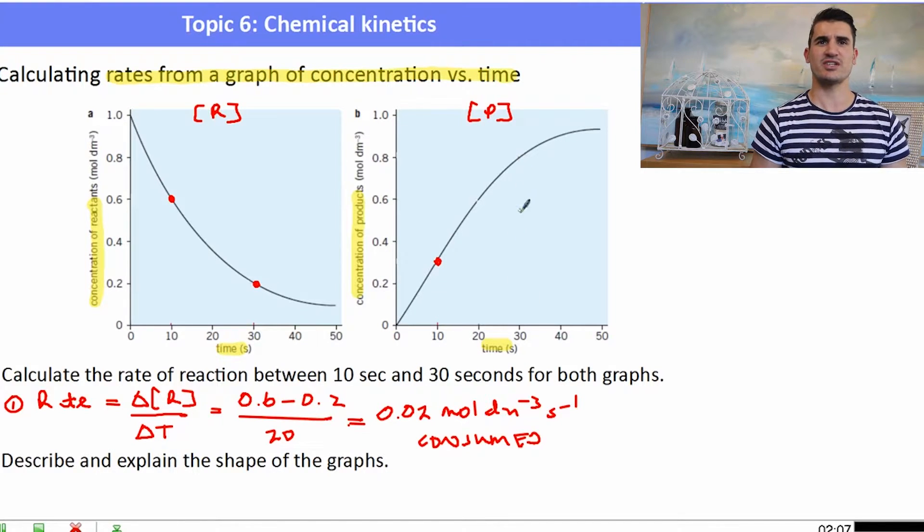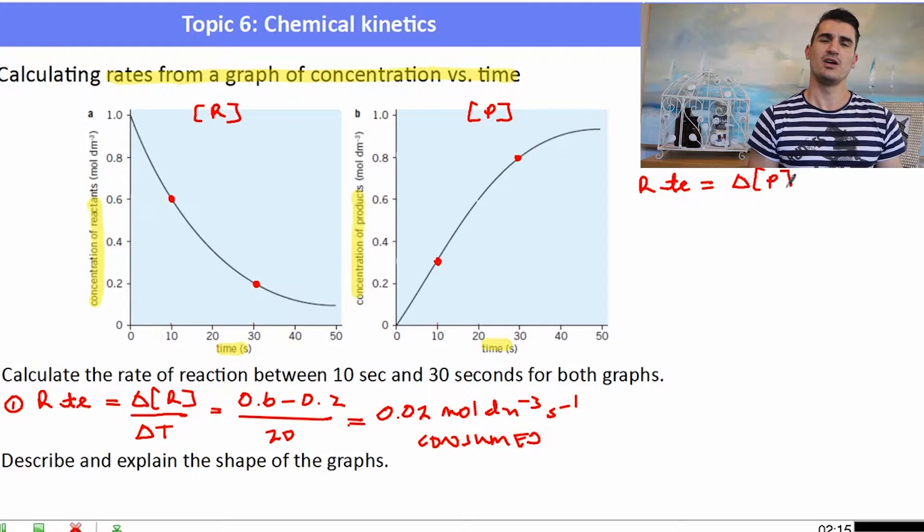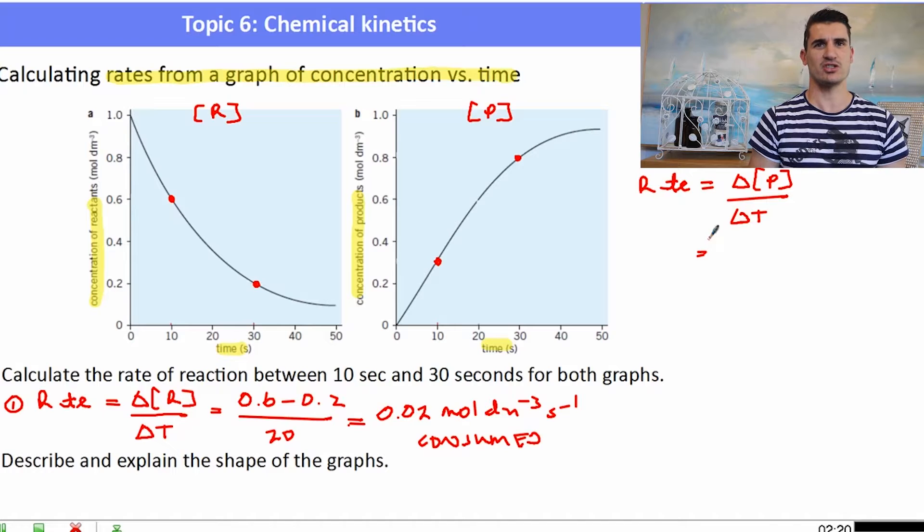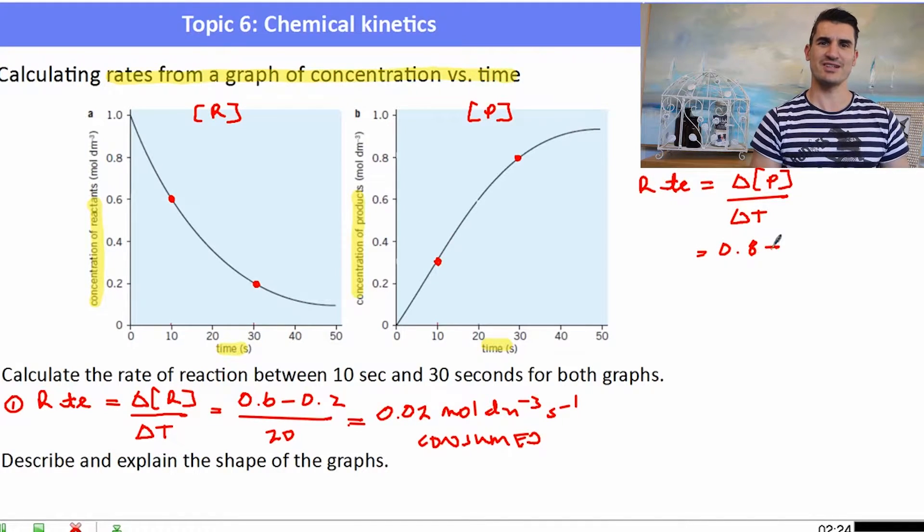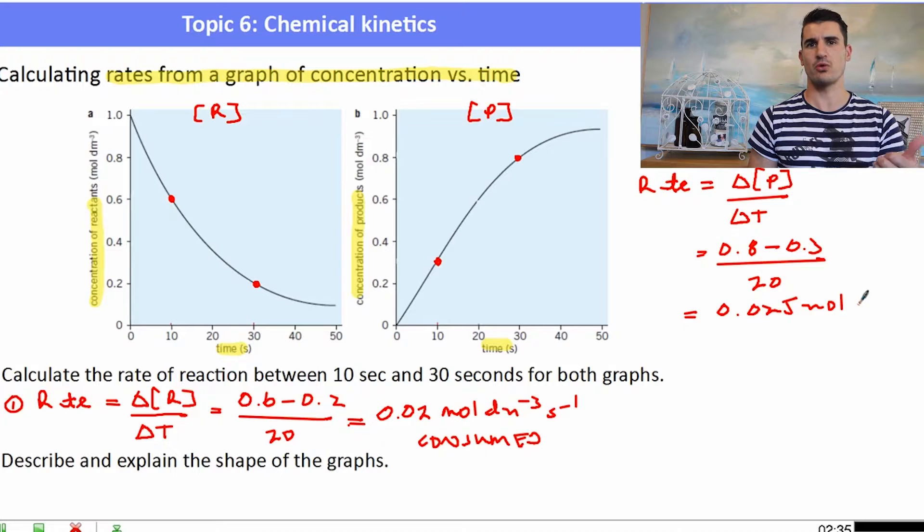For graph number two, we need to do the same thing. So we go and find the points on the graph at 10 and 30 seconds, and then we can work out the average rate. So the rate is equal to the change in concentrations of the products divided by the change in time. So the change in concentrations of the products for this one was 0.8 take away 0.3 divided by 20 seconds. So we have our rate as 0.025, and the units will be the same because we're working in mole per decimetre cubed and seconds.